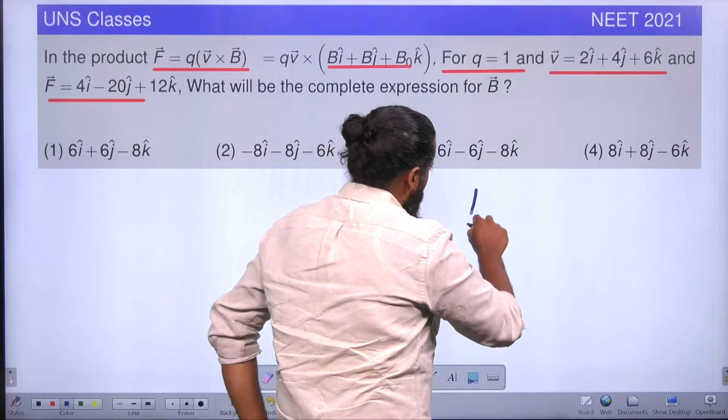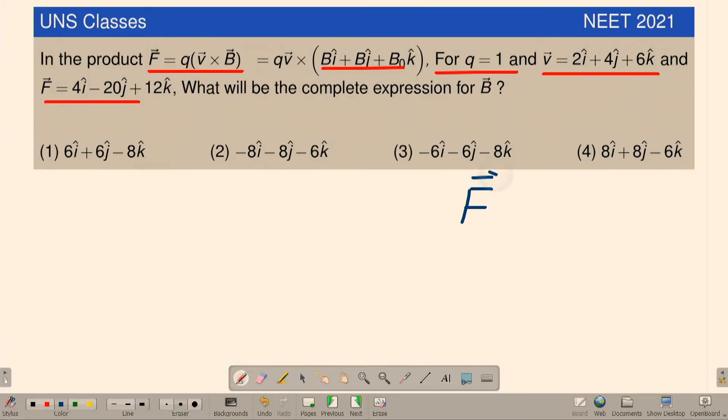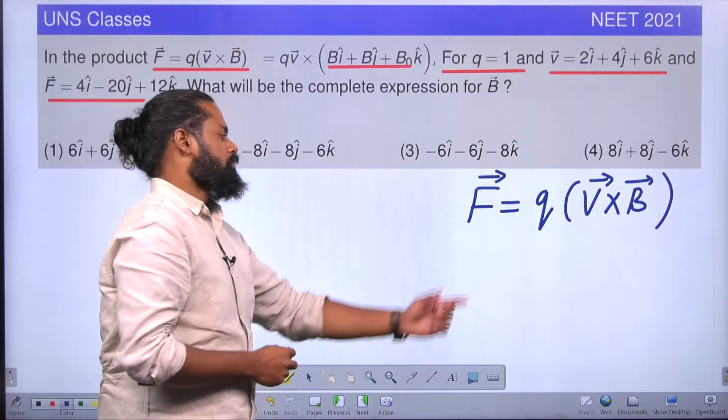You know, the force acting on a charged particle is q times v cross B. This is a scalar quantity, velocity cross product with magnetic field in that region.